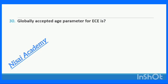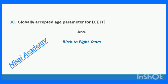Question 30: The globally expected age parameter for early childhood education is birth to 8 years. The right answer is Birth to 8 years.